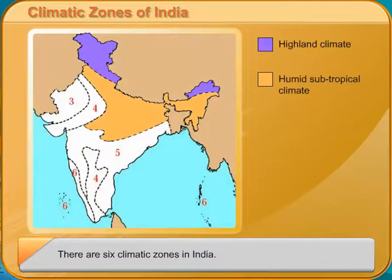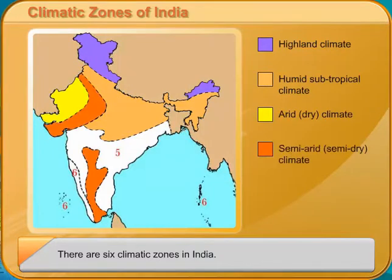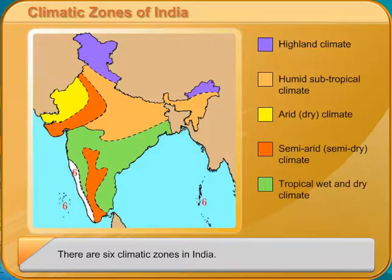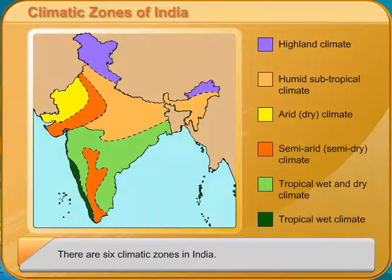Humid subtropical climate. This zone has hot summers. The monsoons in the eastern parts of this zone are heavier than in the western parts. The winters are cool. The northern plains are in this zone.